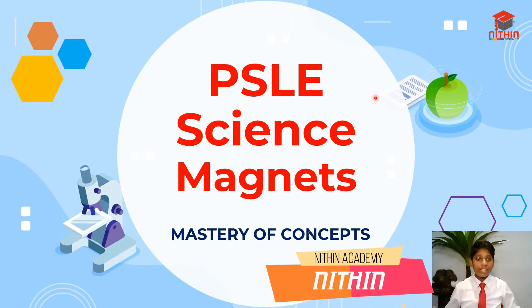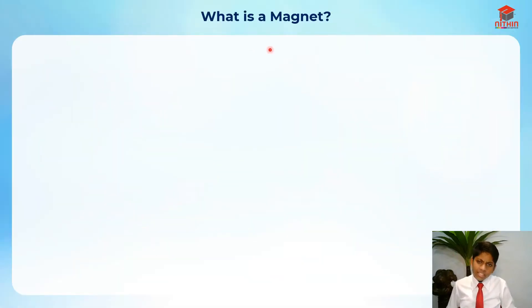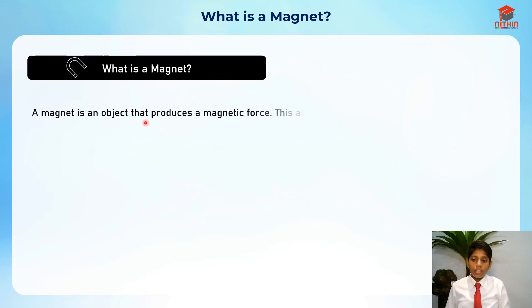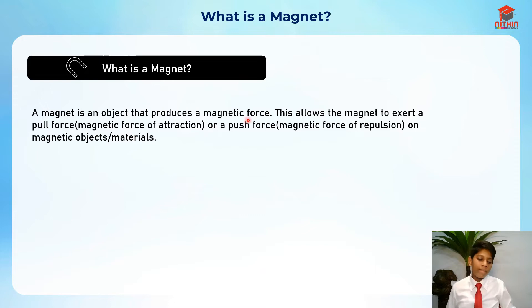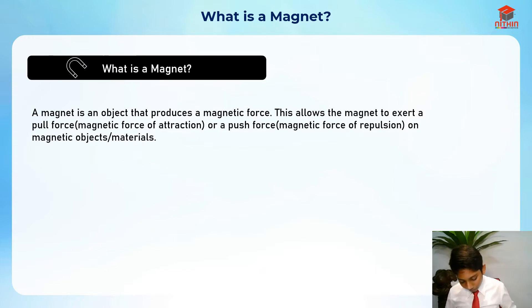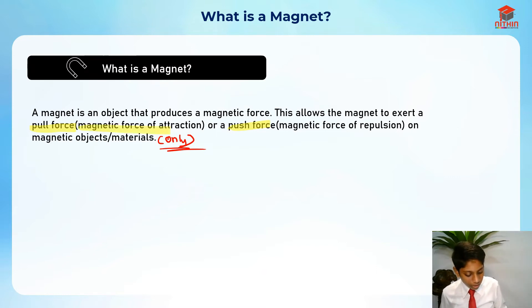Hi everyone, my name is Nitin and welcome back to PSAD Science where I'll be going through magnets today. A magnet is an object that produces a magnetic force. This allows the magnet to exert a pull force, which is basically the magnetic force of attraction, or a push force, a magnetic force of repulsion, on magnetic objects or materials only.